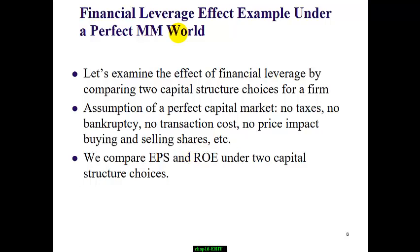Next, we're going to look at an example of two capital structures in a perfect capital market — where there is no corporate tax, no bankruptcy, no transaction costs, and no price impact when you buy or sell shares, so the stock price stays constant.